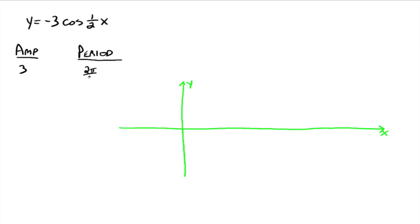Alright, so let's look at this one. So we have negative 3 times the cosine of 1 half x. The amplitude would be the absolute value of negative 3, which would be 3. The period would be 2 pi divided by 1 half, which would be, everybody agree, 4 pi.